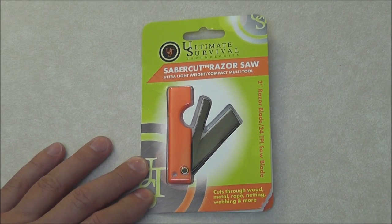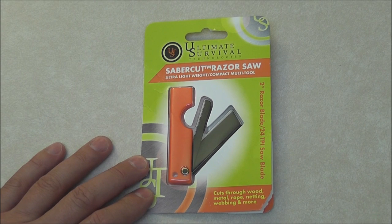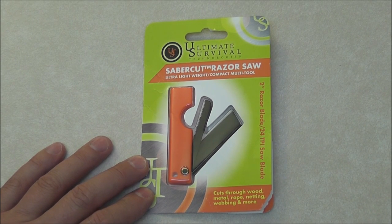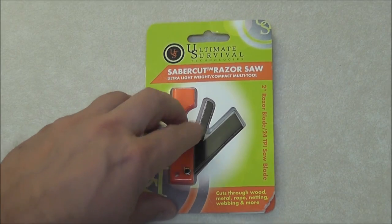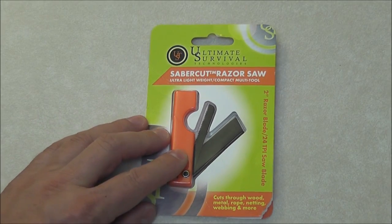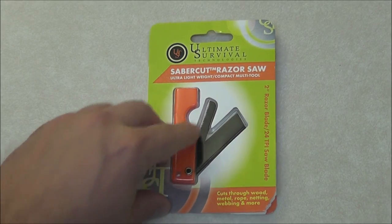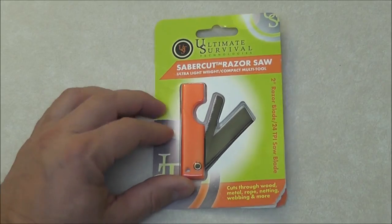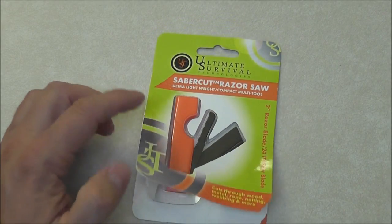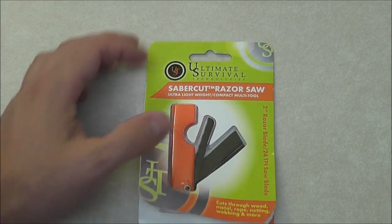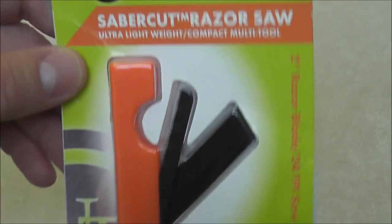Hey guys, Patriot coming to you with another review. This one's going to be on the UST or Ultimate Survival Technologies Sabercut Razor Saw. Sabercut is a brand name for these types of jigsaw style blades. This one's a lot shorter than most jigsaw blades, but you can see I've already got this open. I just put it back into the package so that you can see what it looked like.